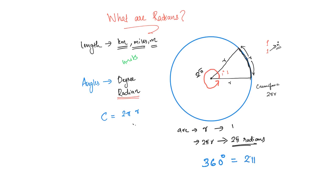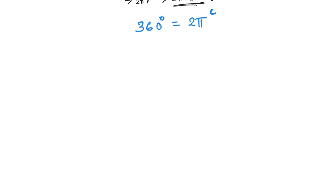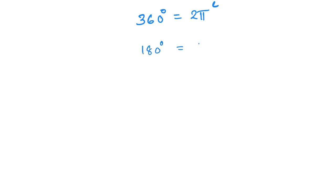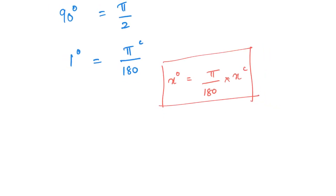360 degrees equal to 2π radians. This is very easy to calculate: 360 degrees equal to 2π radians, 180 degrees equal to π radians, 90 degrees equal to π/2 radians. From this: 1 degree equal to π/180 radians, and x degrees equal to π/180 × x radians.